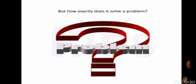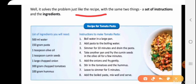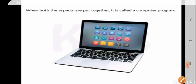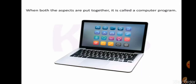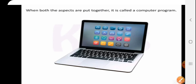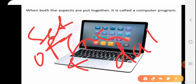How does the computer exactly solve the problem? Just like our recipe uses a set of instructions and ingredients, the computer uses instructions and data — we call those ingredients 'data' in computing. It uses instructions and data to solve the problem. When both these things are put together inside the computer, we call it a computer program. The two important things required are: a set of instructions and data.